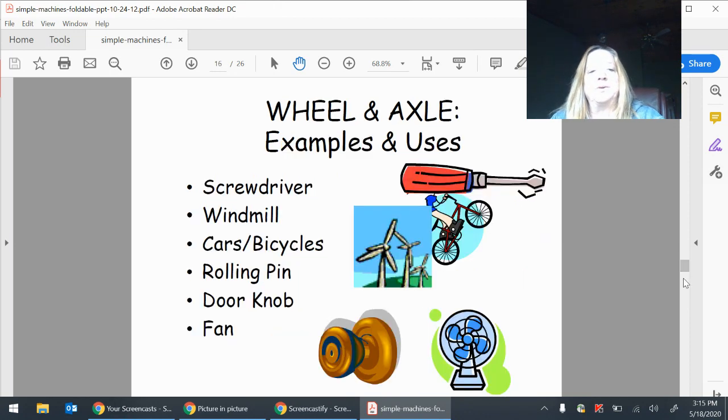Screwdriver, windmill, cars, bicycles, rolling pin, door knob, and fan are all examples of a wheel and axle.